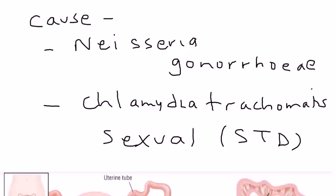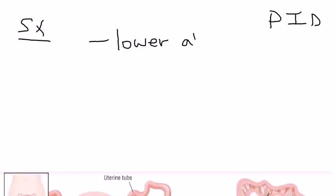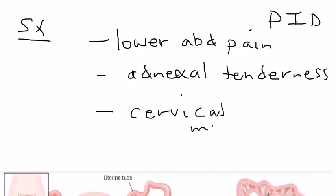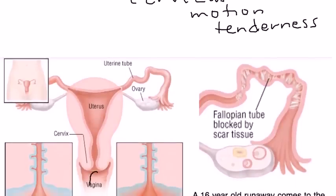PID most commonly occurs in women less than 35 years of age. The symptoms of PID are actually pretty classic — there's a triad. There's lower abdominal pain, adnexal tenderness (which means pain in the sides of the abdomen near the fallopian tubes, and can be unilateral or bilateral), and cervical motion tenderness, which is most likely elicited on physical exam.